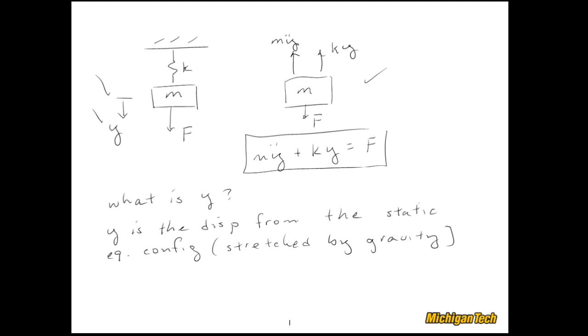That also explains the mystery of why there was no mg in this equation. I mean, we knew that this thing was hanging in a gravitational field, but a lot of times when people attack these problems, they say, well, we'll ignore gravity. Well, you're not ignoring it. It's actually because you are defining y as being from the static equilibrium configuration.